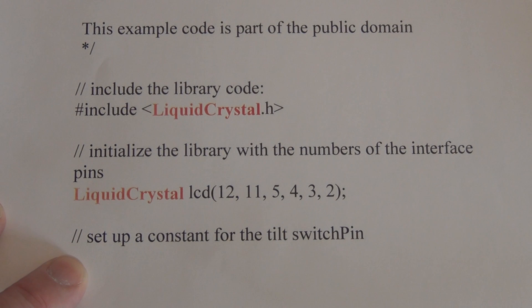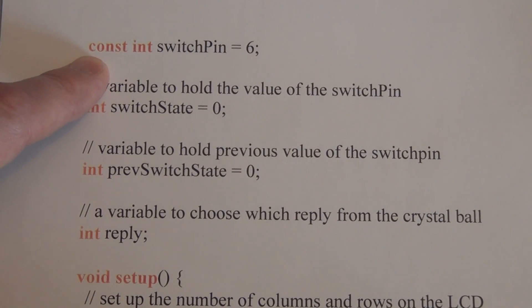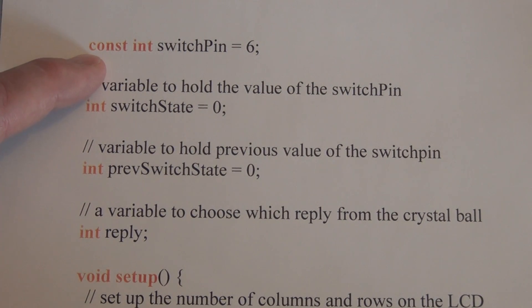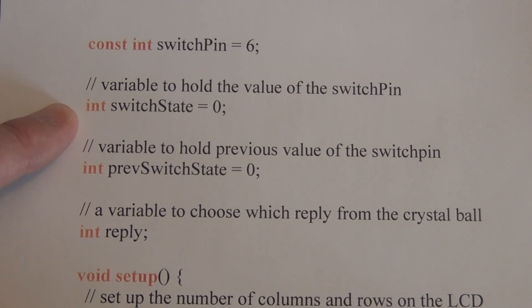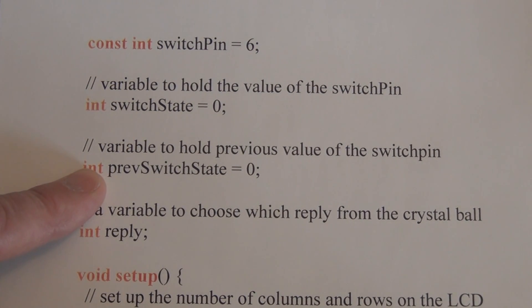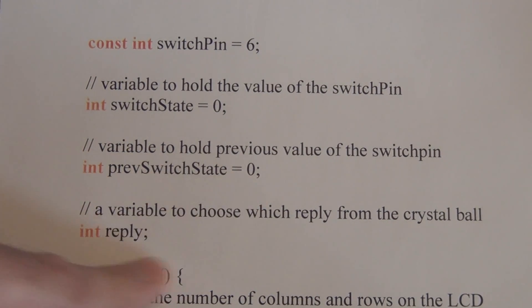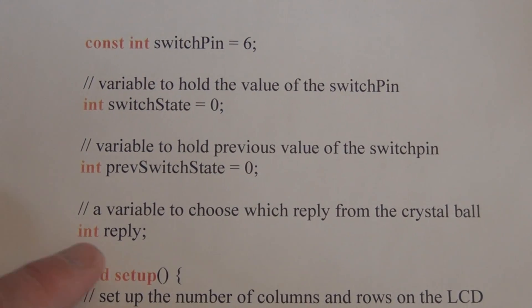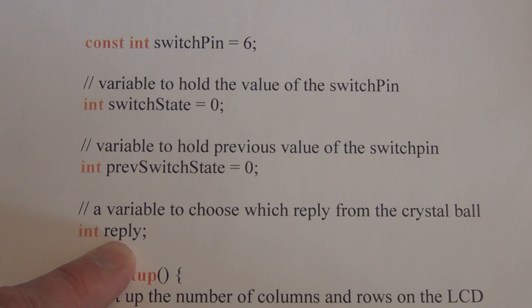And then we set up the constants that are going to keep track of the current and previous states of the tilt switch. So we have a constant integer variable switchPin equal to pin 6. We have the variable that's going to hold the value of the switch pin, which is integer switchState, initializing that to 0. And the variable to hold the previous value of the switch pin, integer prevSwitchState, initializing that to 0 also. And this variable reply will hold a value that tells us which random statement to print on the LCD display.